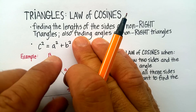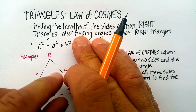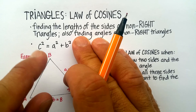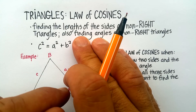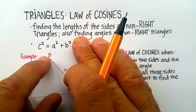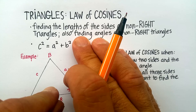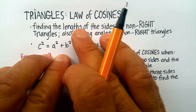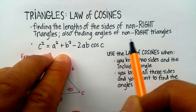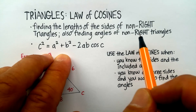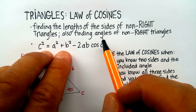The trigonometric ratios — for example, sine of any angle equals the opposite over the hypotenuse — are also only good for right triangles. The law of cosines, on the other hand, is good for any non-right triangle, and you can use it to find the lengths of sides or the angles themselves.